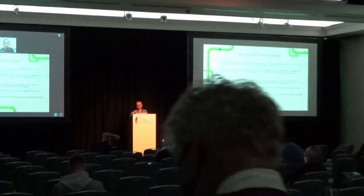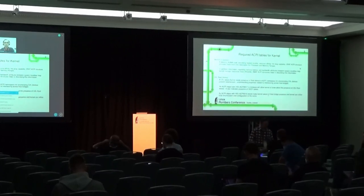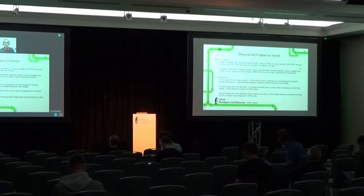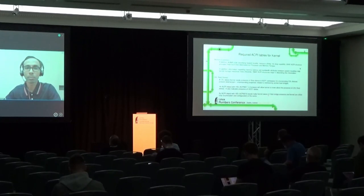The objective is to have a memory expansion device, and when we have a memory expansion device, the kernel would expect a memory-only NUMA node, which would describe the system locality, the source affinity, and that capability. For the kernel, if there are any heterogeneous properties like memory latencies and bandwidth attributes to be shared, that's where the HMAT table is being prepared and shared with the kernel.